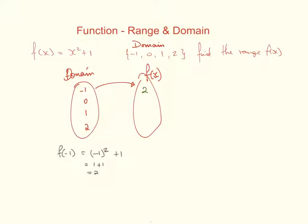When I plug the 0 in, 0 will be mapped onto 1. So I'll just put the little mapping there. And then when I put the 1 in, I'm going to get 2 again. So that's going to be mapped onto 2. And then when I put 2 in, that's going to give me 5. So that's going to be mapped onto 5.